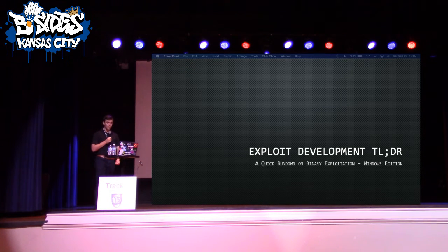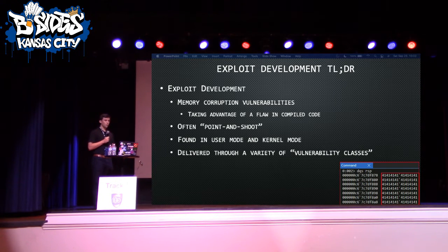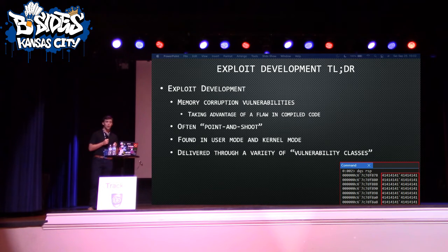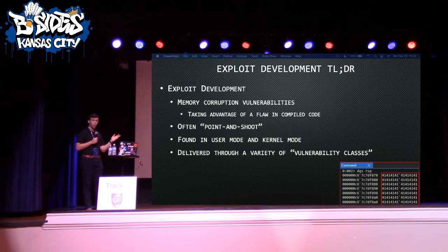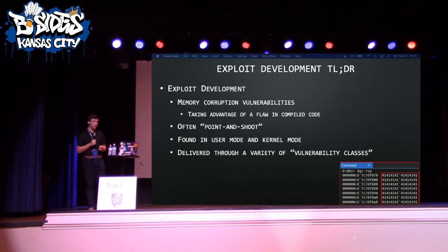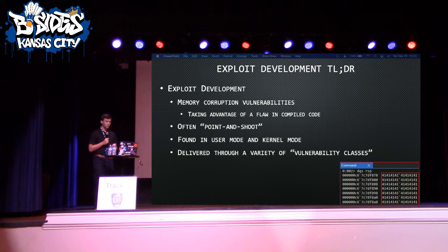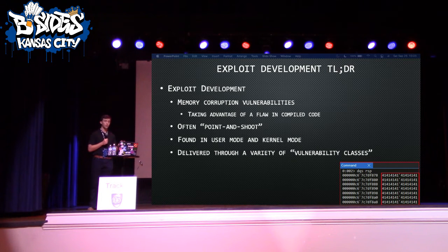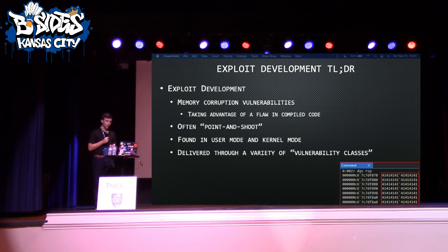So this is exploit development — the quick rundown. When we talk about exploit development, mainly what we're talking about in the context of this talk is binary exploitation or memory corruption — taking advantage of flaws in compiled code or binaries. Web vulnerabilities are their own class, but here we're talking about memory corruption. These are attractive because often they're point and shoot: an adversary develops an exploit, runs it, and achieves their objective. They're found in both user mode and kernel mode — user mode for initial access, kernel mode for escalation of privileges.